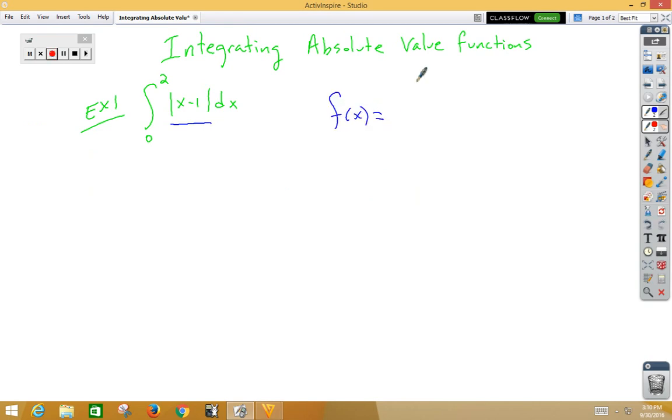So we have f(x) is equal to—remember we're going to write it once positively and once negatively. We need a breaking point: x is greater than, x is less than or equal to.